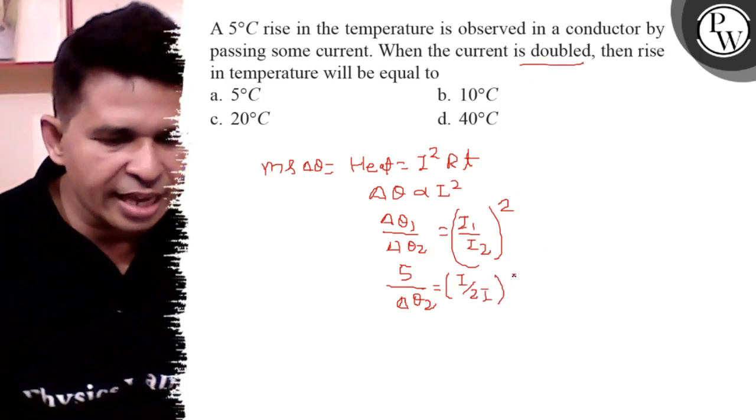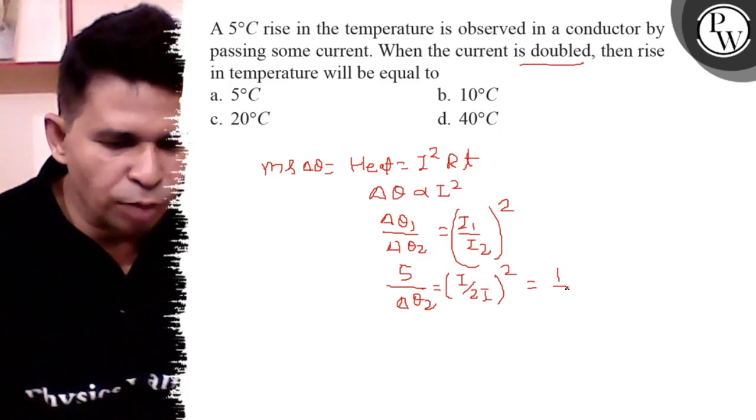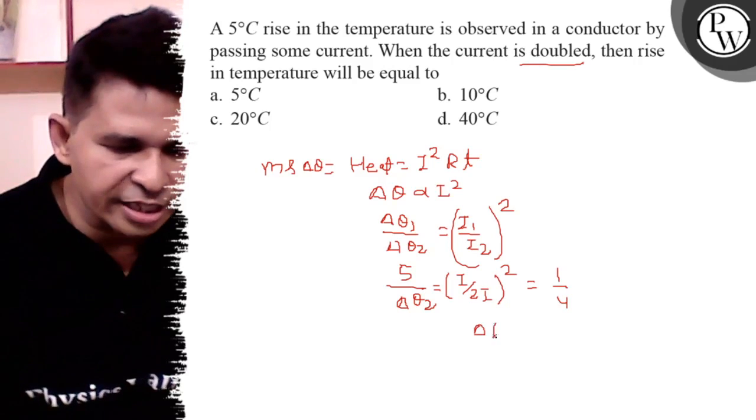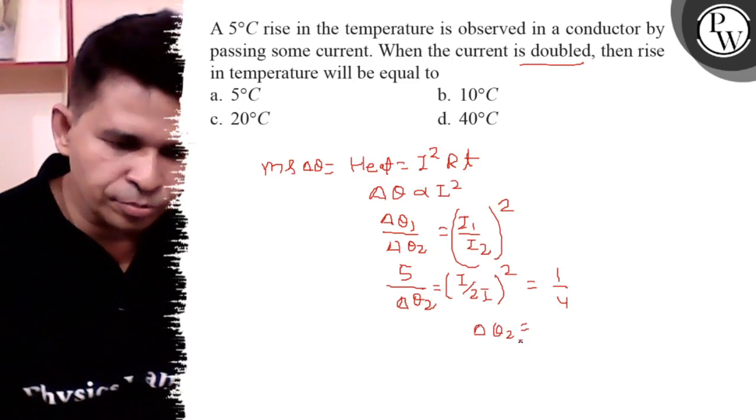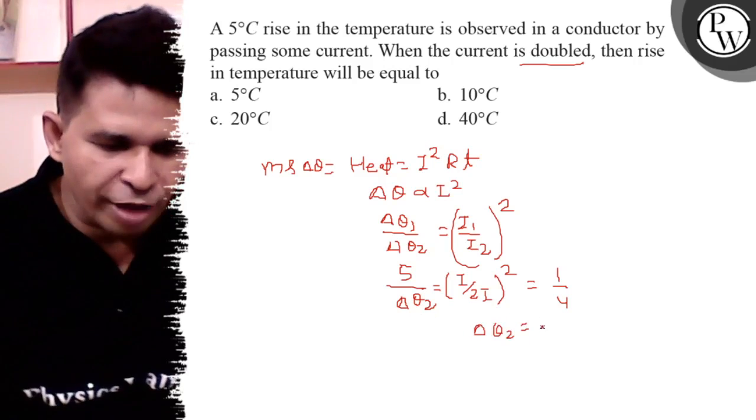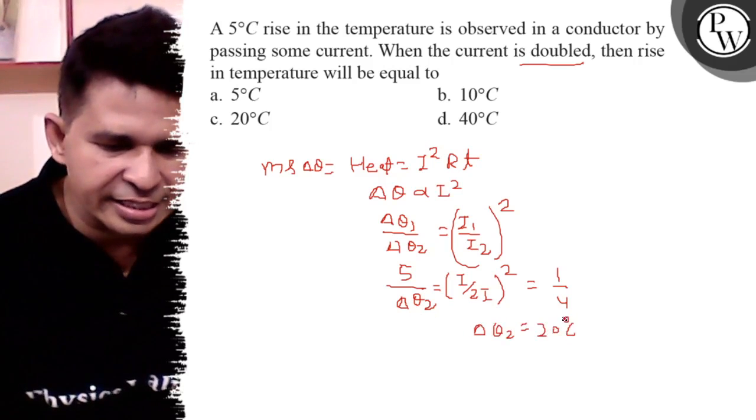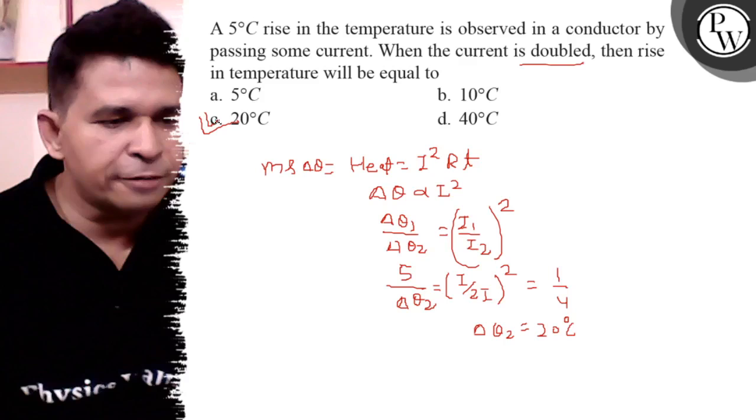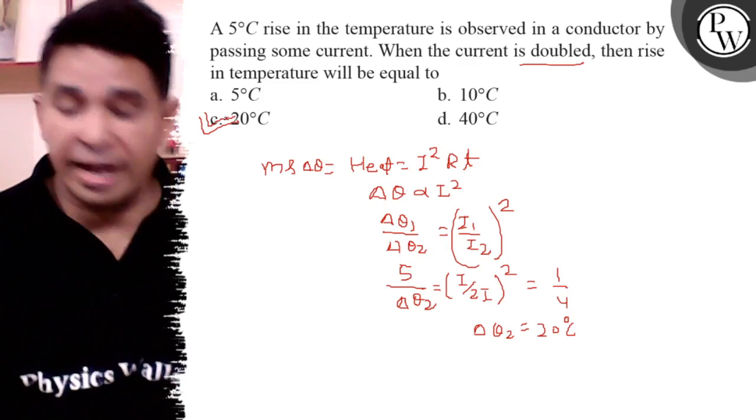So I cancel, it is 1 by 4. So delta theta 2 is 4 times 5 equals 20 degree Celsius. So final answer is C. Thank you, all the best.